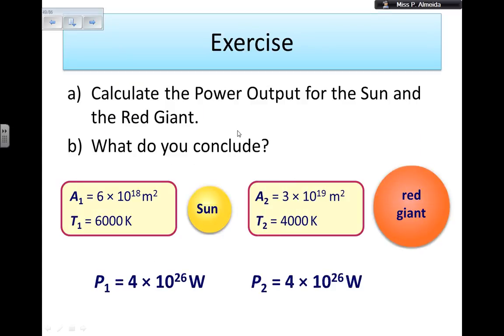And all that I do is substitute the values. So the constant is a constant. Then I multiply by the area and times by the temperature to the power of 4. If you do that, you see that I can have a small star that is hotter that has exactly the same power as a red star that is cooler. The only difference is what one loses in terms of heat, the other one has more in terms of area. So both of them will have 4 times 10 to the power of 26 watts.